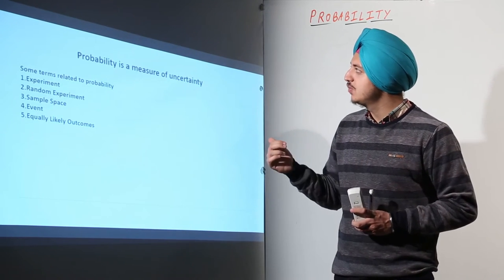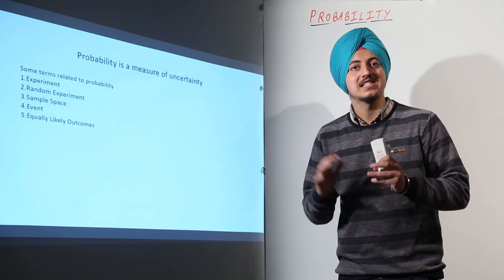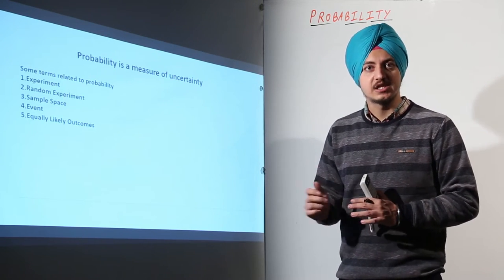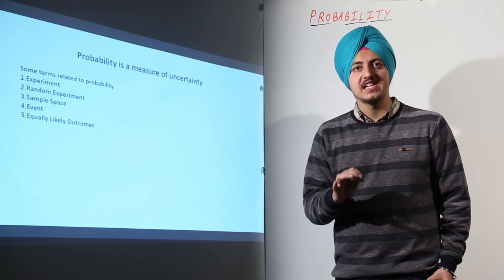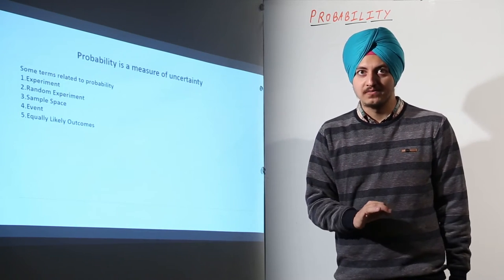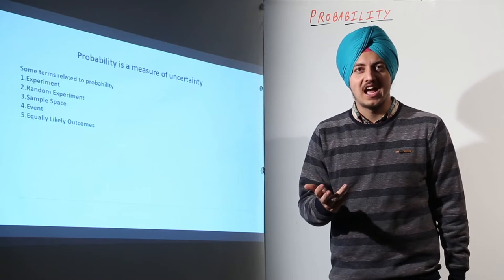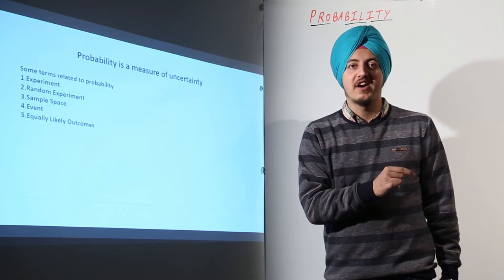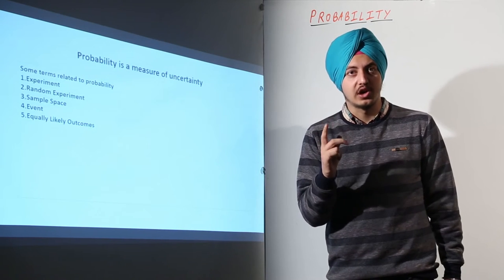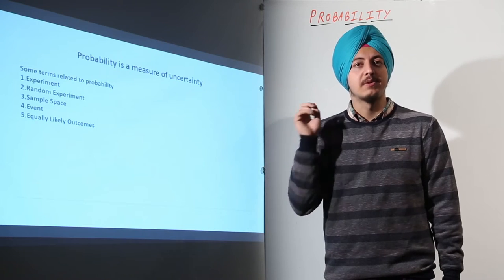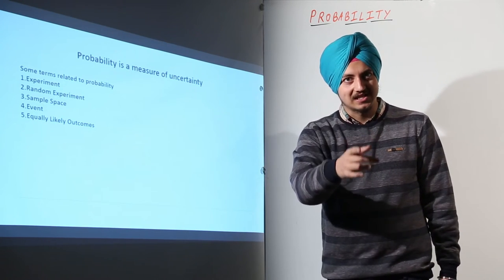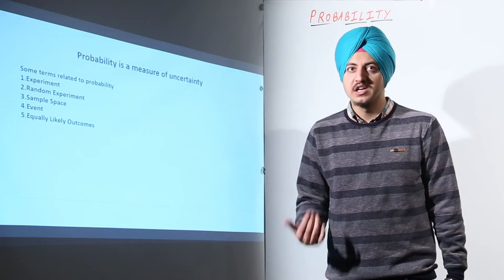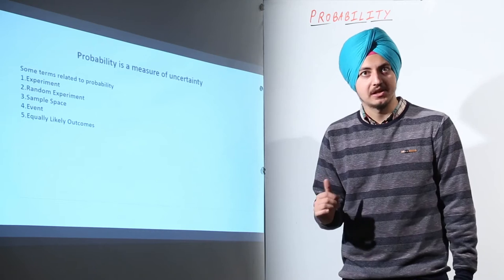Now there are some terms related to probability. The first term is experiment. An experiment is any action that results in an outcome — like experiments you perform in labs. For example, switching on a fan results in the fan rotating, throwing a ball results in the ball going that way, and tossing a coin results in either heads or tails. This is all an experiment.